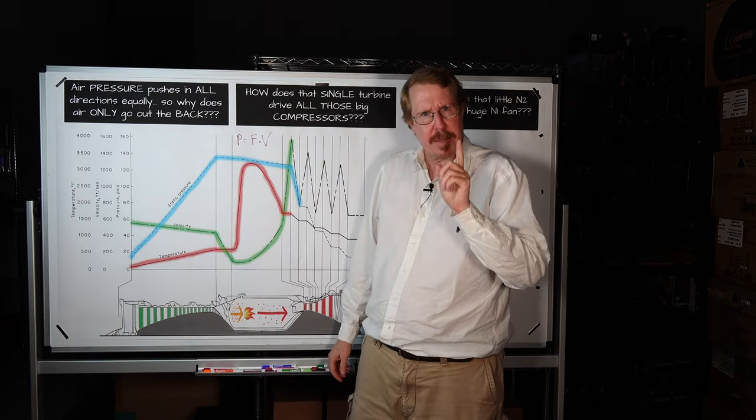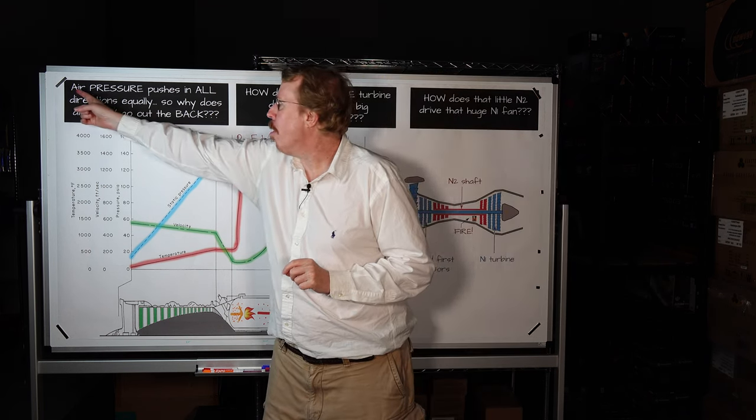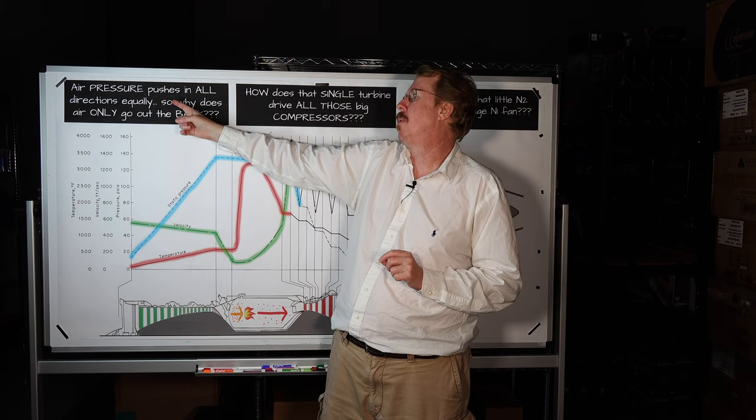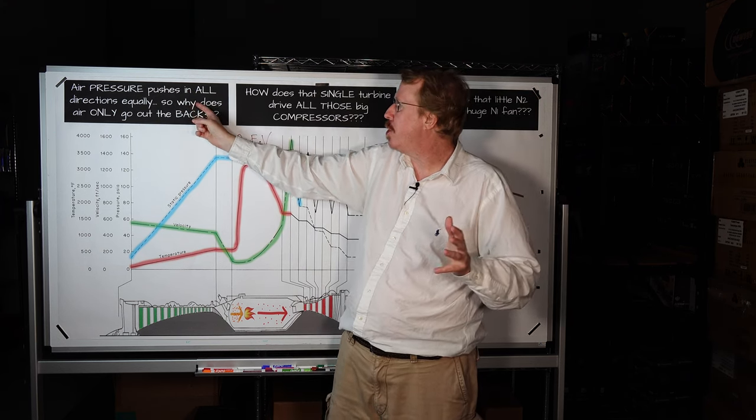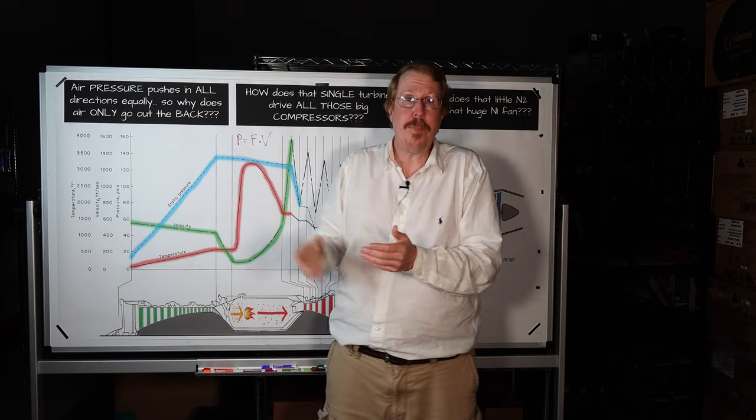So let me specify the question as precisely as I can. Air pressure pushes in all directions equally. So why, with a jet engine, does the pressurized air only go out the back?